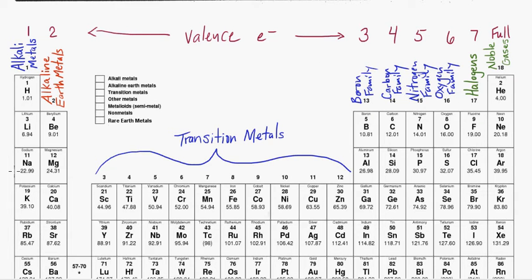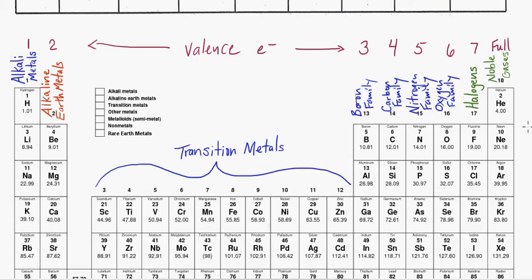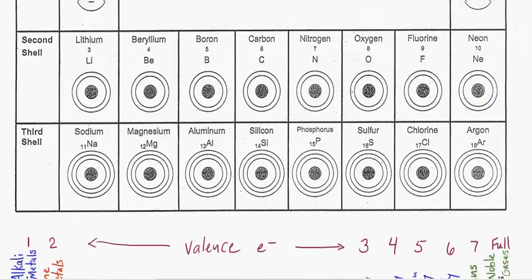So those are the families, and again, they're the columns, the up and down members of the periodic table here. What you're also seeing at the top is the valence electron number. You can see the valence electron number, and I'm going to show you how to find that.